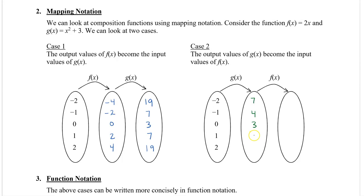Continuing: 0 squared plus 3, 1 squared plus 3, and 2 squared plus 3. Now these outputs of g of x become the input of f of x. So we substitute 7, 4, 3, 4, and 7 into 2 times x: 2 times 7 is 14, 2 times 4 is 8, 2 times 3 is 6, 2 times 4 is 8 again, and 2 times 7 is 14. Notice that the results for case 1 and case 2 are different, so it's very important to identify which function we substitute into first.